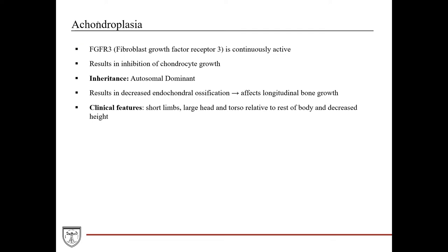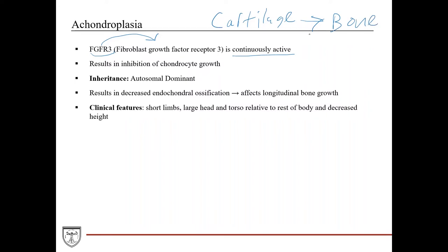First, achondroplasia. This is due to a mutation in the FGFR3 gene, which codes for the fibroblast growth factor receptor 3, which is a protein that contributes to collagen synthesis and maintaining collagen structure, and it is continuously active. As a result of contributing to collagen synthesis and structure, it's involved in the process of laying down cartilage during fetal development, which then becomes bone. This is one of the processes of developing bone.